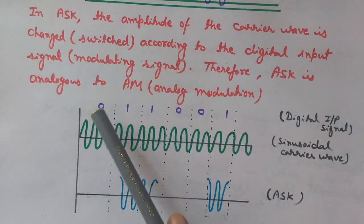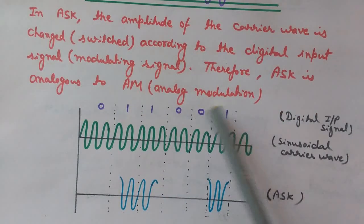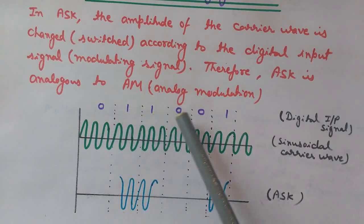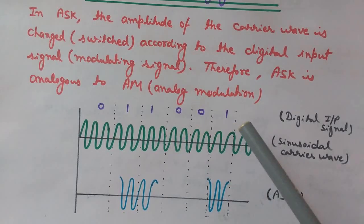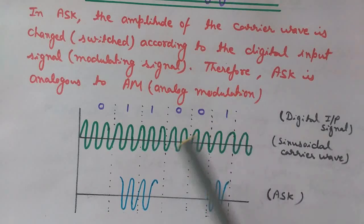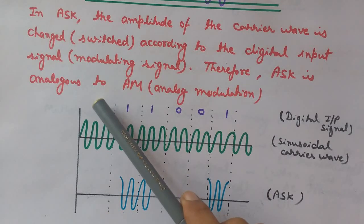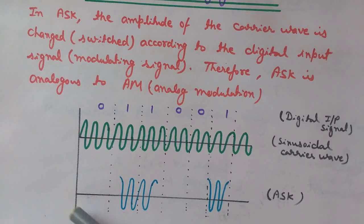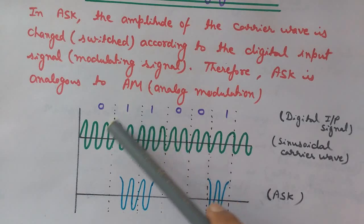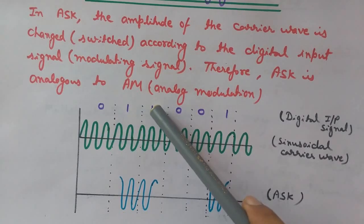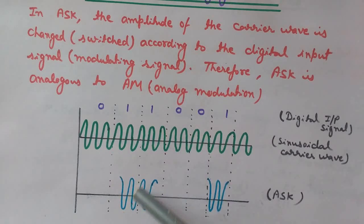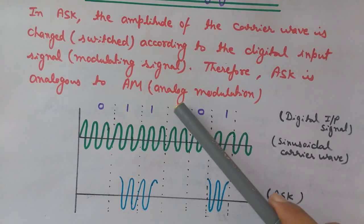The concept becomes clearer with the waveform. Here we have a stream of digital input signals: 0, 1, 1, 0, 0, 0, 1. There is also a sinusoidal carrier wave, which is analog in form. Whenever the digital input is 0, no wave is transmitted — transmission is zero. But when it is 1, a continuous sinusoidal carrier wave is passed.